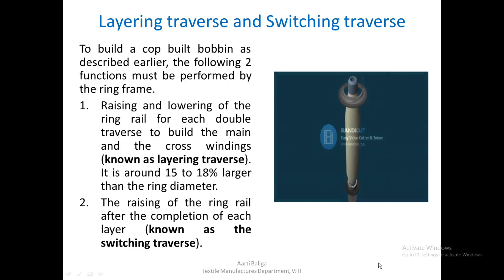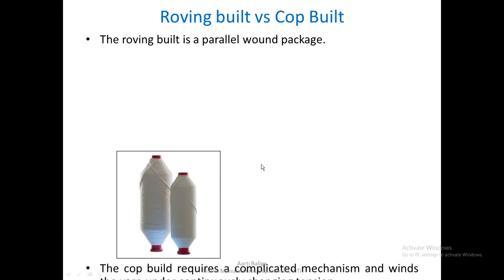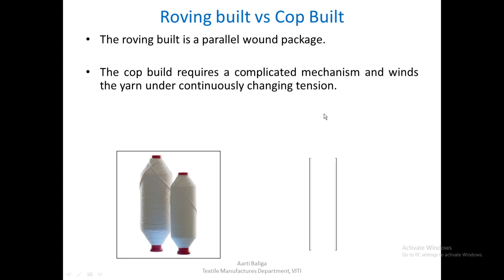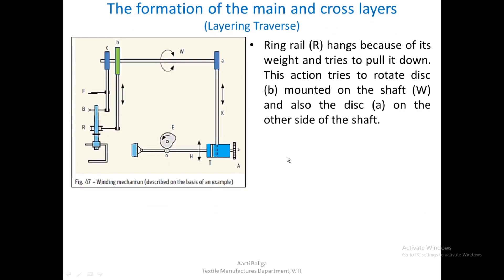The roving build is a parallel-wound package. The cop build requires a complicated mechanism and winds the yarn under continuously changing tension. The cop build is ideal for unwinding and permits high unwinding speeds at the subsequent process. With this, we are ready to understand the mechanism used to build this particular cop.